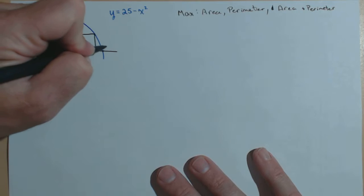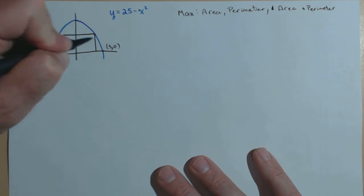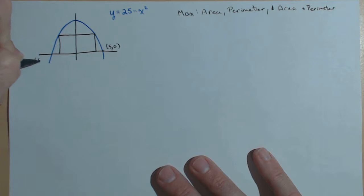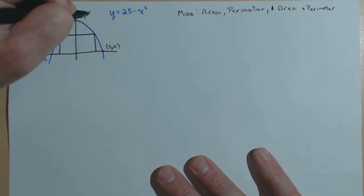So, we know that this point here is going to be 5, 0. This point here is going to be negative 5, 0. This point here is going to be 0, 25.